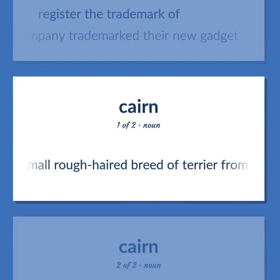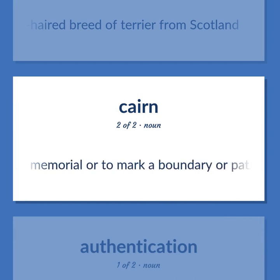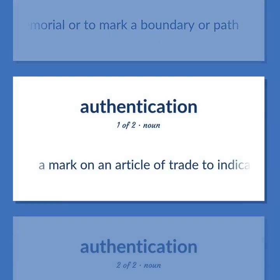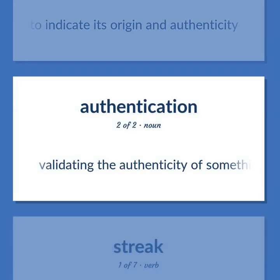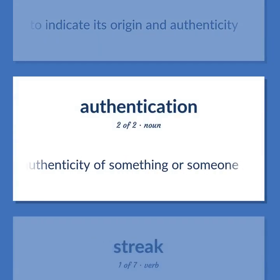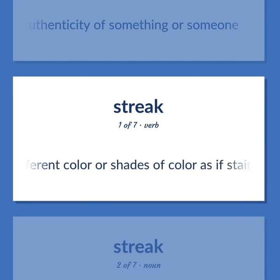Cairn: a small rough-haired breed of terrier from Scotland. A mound of stones piled up as a memorial or to mark a boundary or path. Hallmark: a mark on an article of trade to indicate its origin and authenticity; validating the authenticity of something or someone. Mark with spots or blotches of different color or shades of color as if stained — dapple.